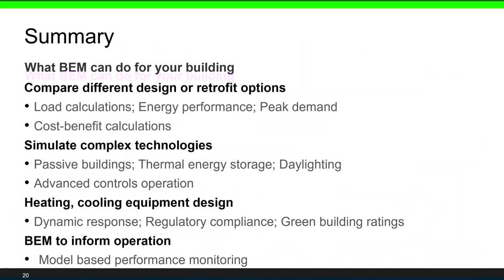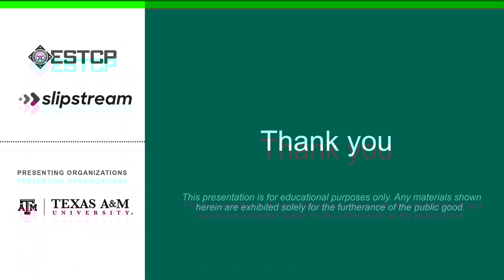In summary, what can BEM do for your building? You can use BEM to compare different design or retrofit options, and to calculate the performance of complex technologies such as passive buildings, thermal energy storage, and advanced control operations. You can use BEM to help design heating and cooling systems, and to inform operation — for instance, deploying model-based performance monitoring. This concludes this short video on Building Energy Modeling 101. Thank you.